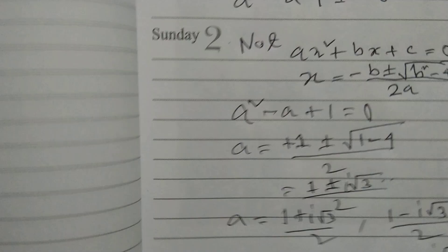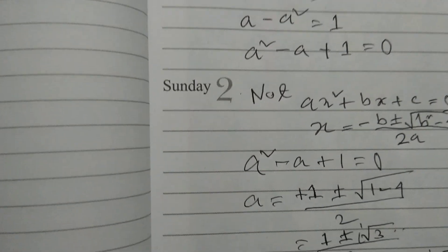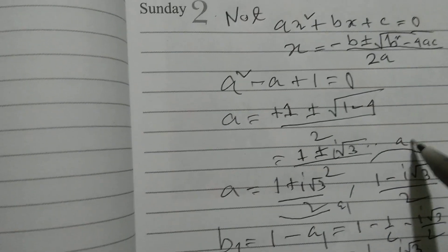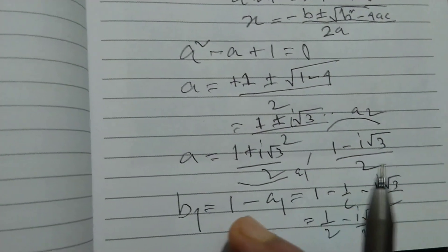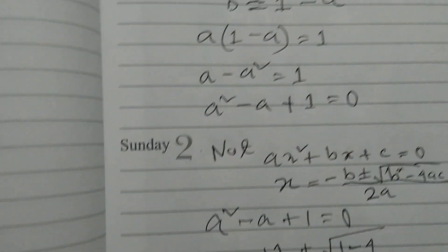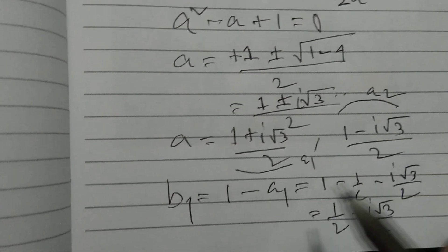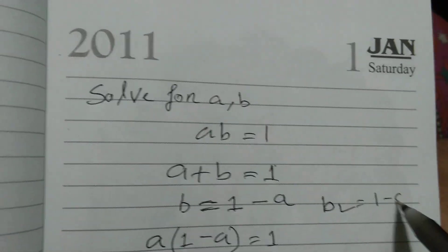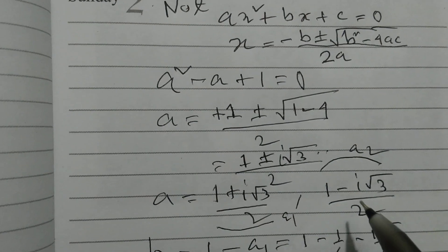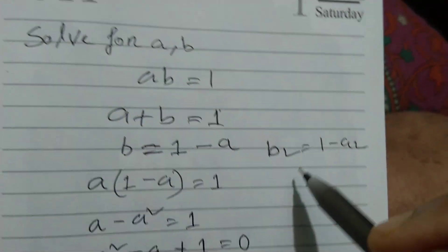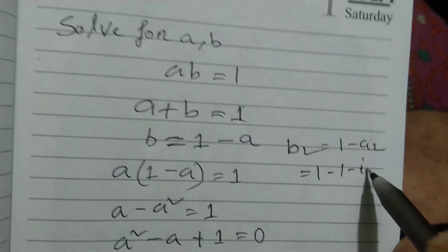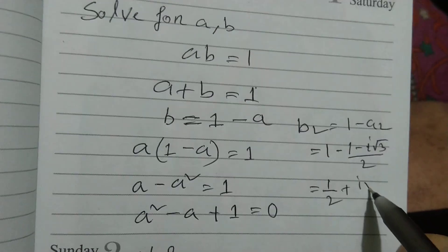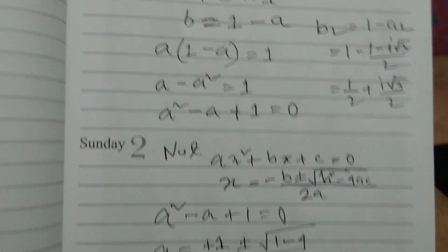This value is called a₁ and the other is a₂. So b₁ = 1 - a₁ and b₂ = 1 - a₂. Looking at a₂: b₂ = 1 - (1/2 + i√3/2) = 1/2 - i√3/2.